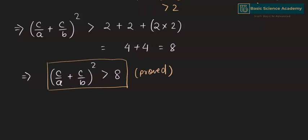We can also prove that (C/A + C/B)² cannot be a positive integer. Please write in the comment box how we can prove that this value cannot be a positive integer.